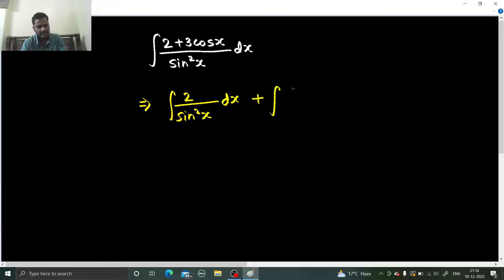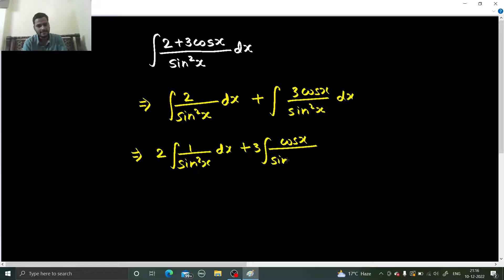plus integral of 3 cos x divided by sine square x dx. Constant can come out. 1 by sine square x dx - constant came out. I can write this as cos x, sine square x is sine x